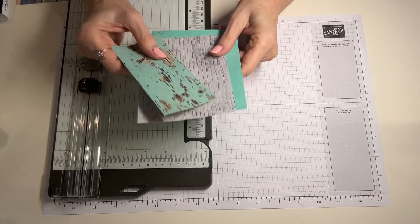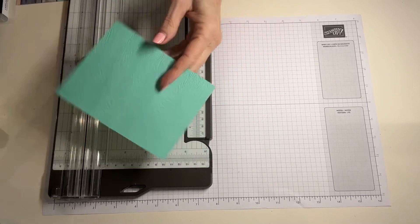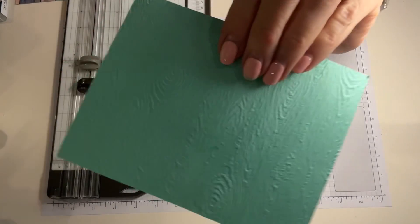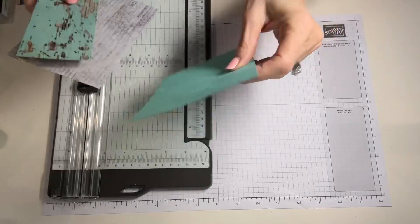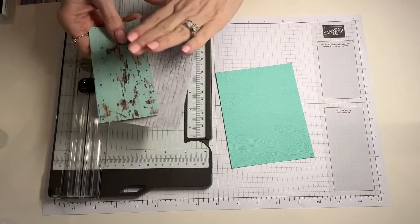Now we're going to make a neutral card. Step one is to cut the card base at five and a half by four and a quarter. I did emboss it like I did in previous videos because I want the back of the card to look as pretty as the front of the card.